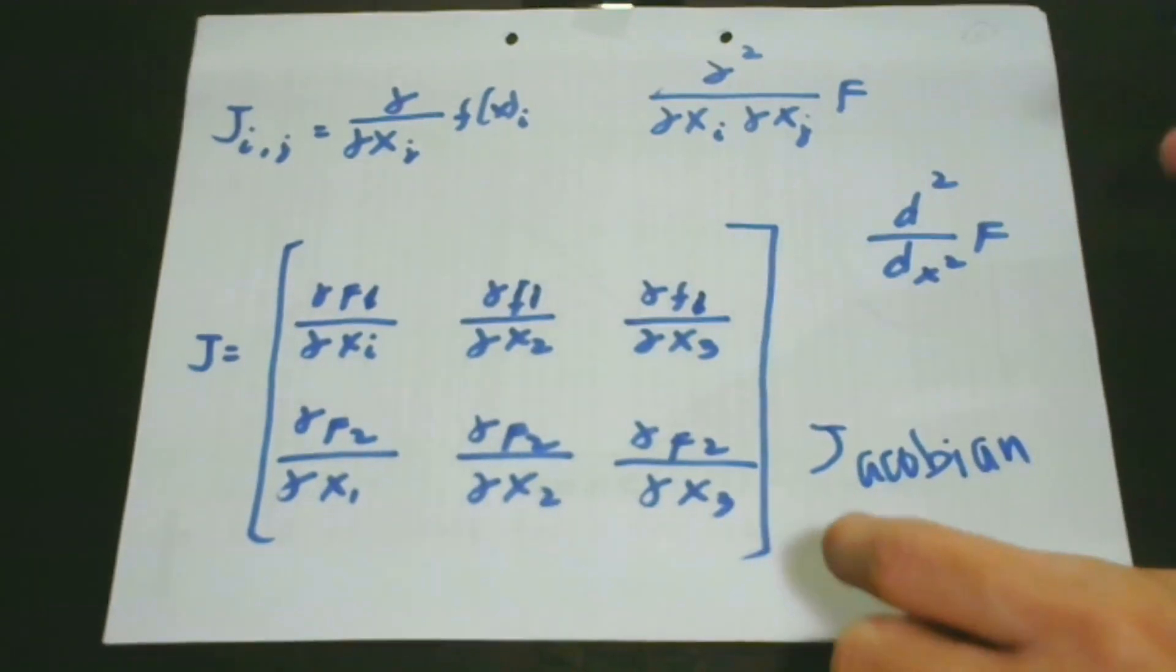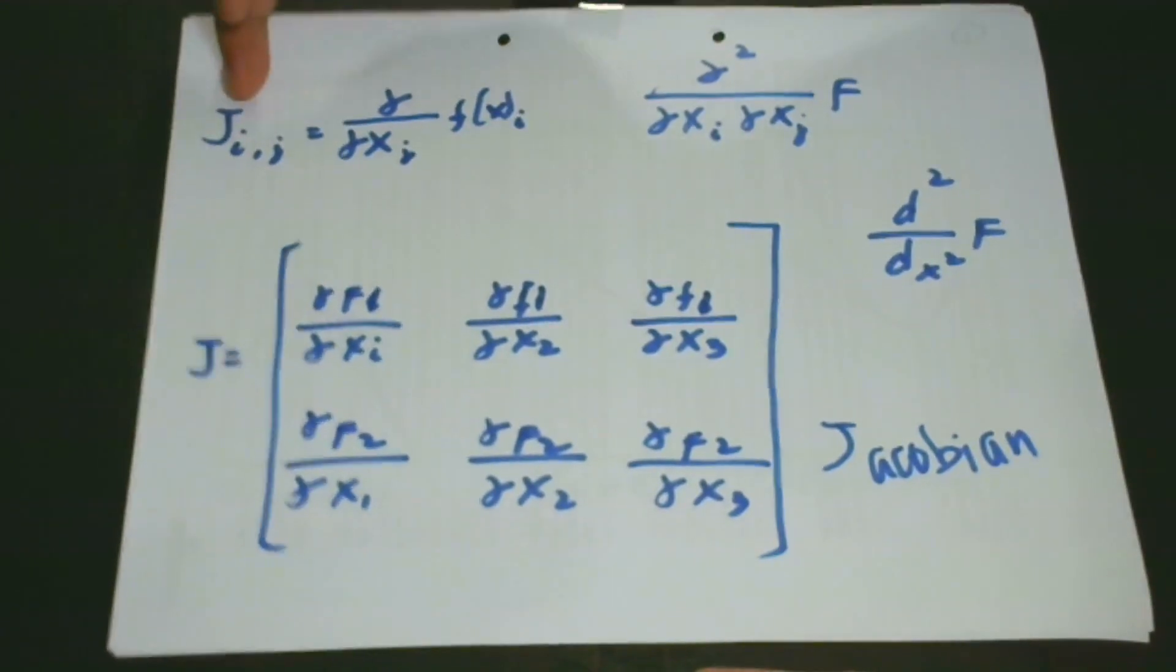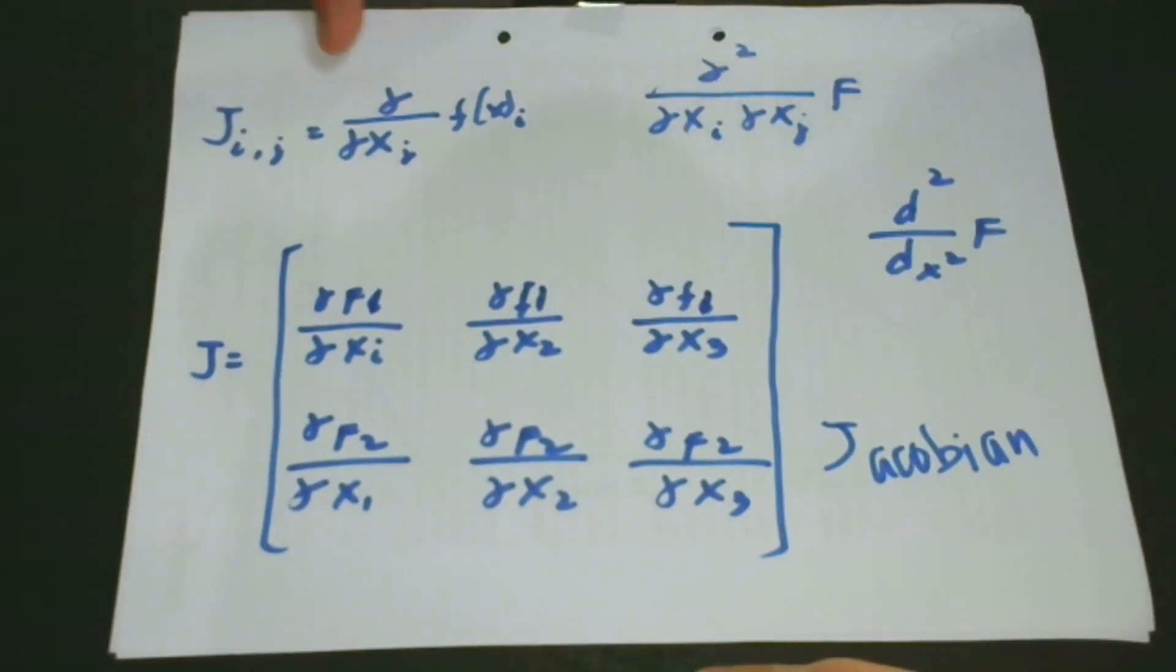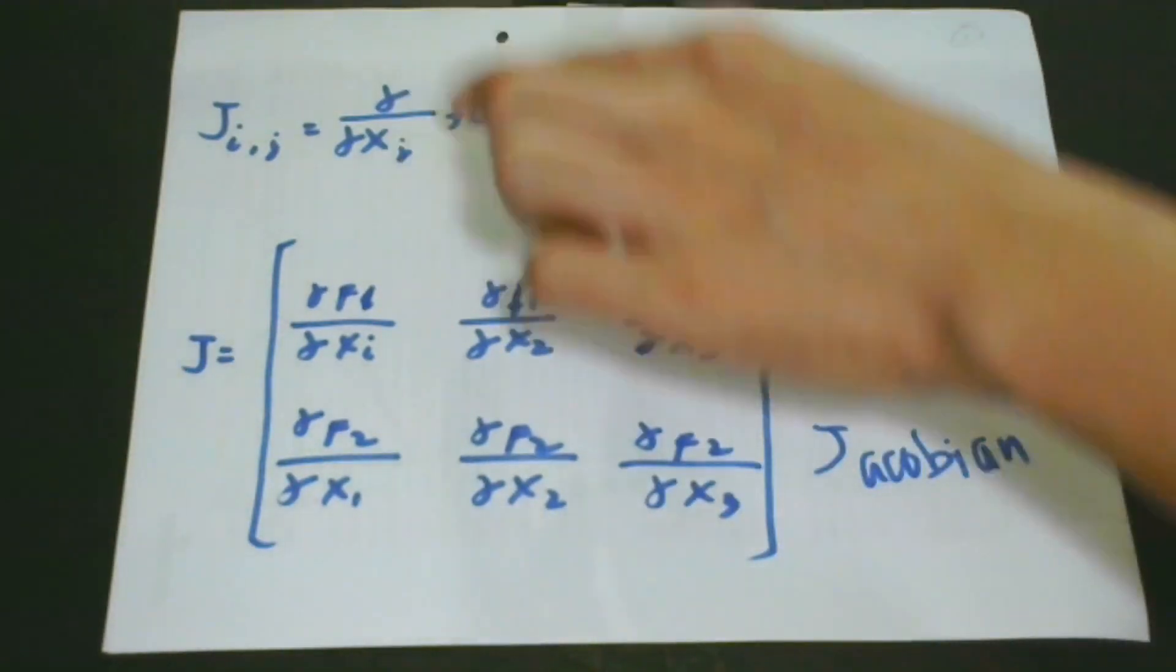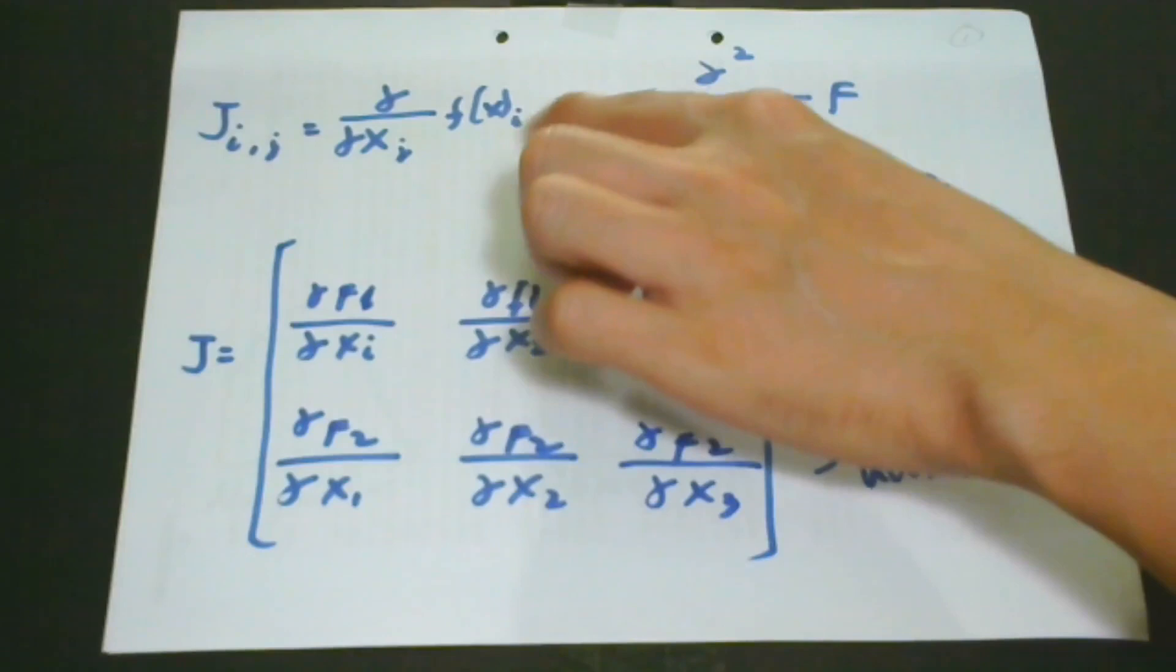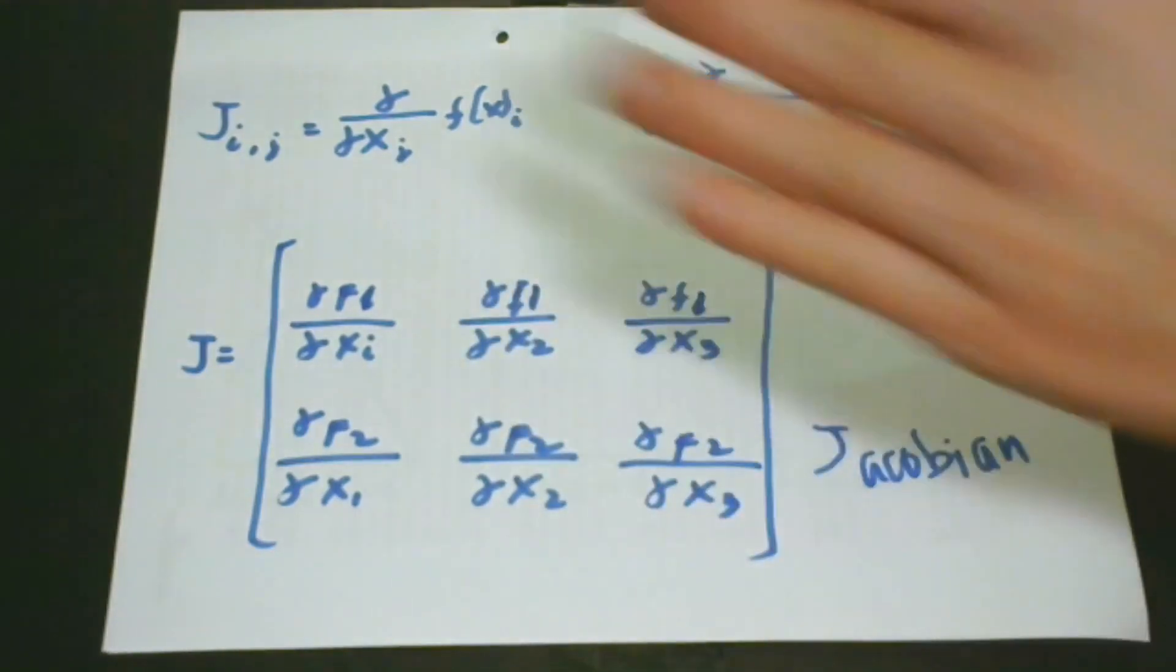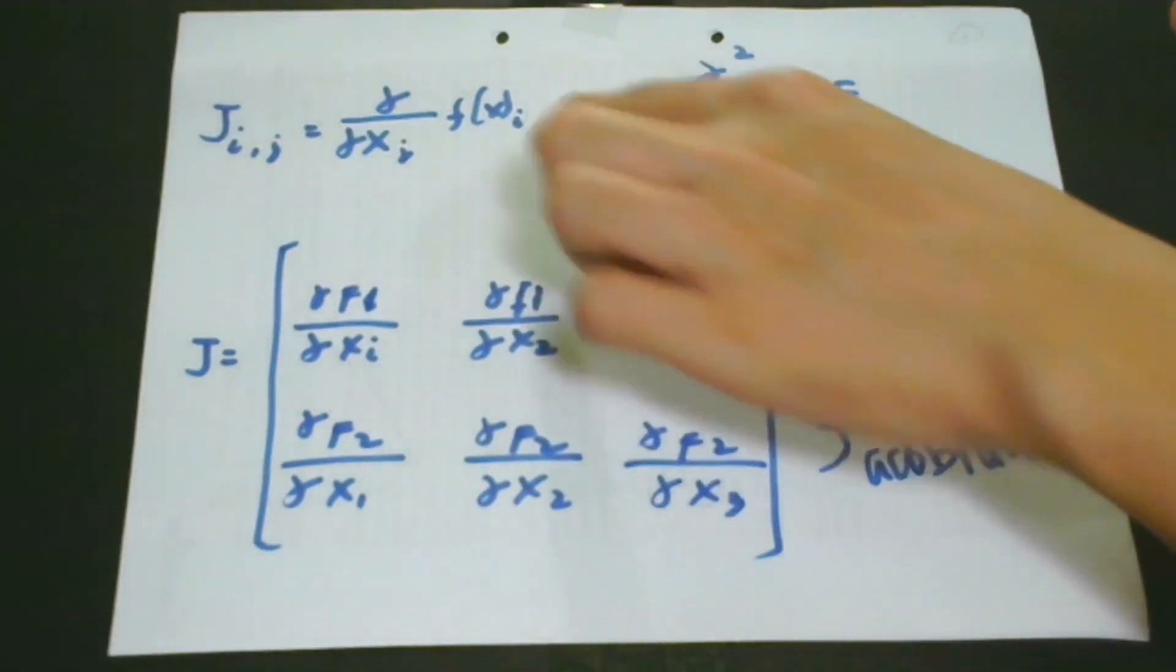Mathematically, it is written as this. We have J, which means Jacobian. Jij is equal to the derivative over the derivative of xi of fj. So if you're going to look at this expression, it may seem so confusing, especially if it's your first time. It may be mind-boggling or difficult. So to best explain this formula, let's have this as an example.